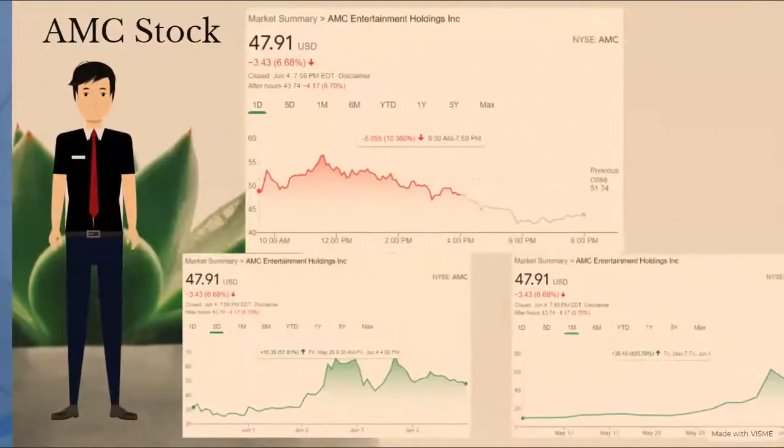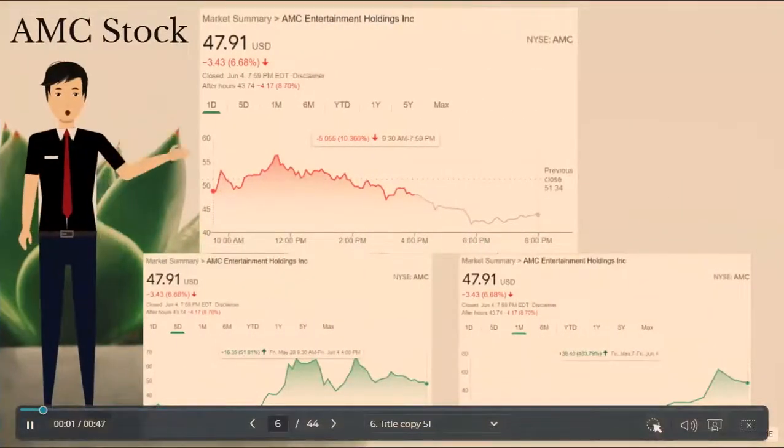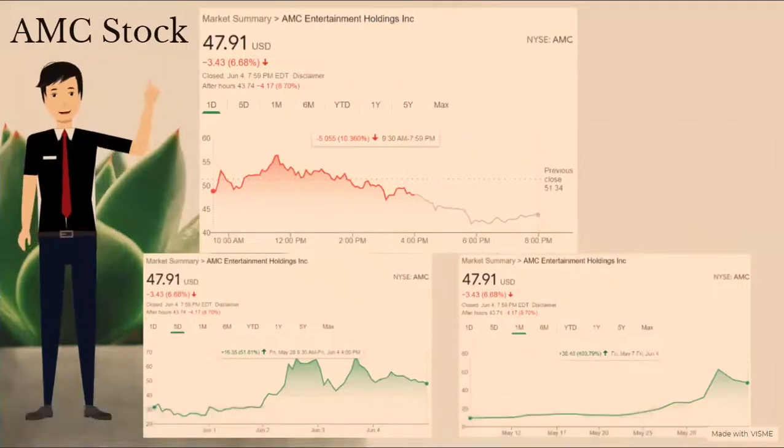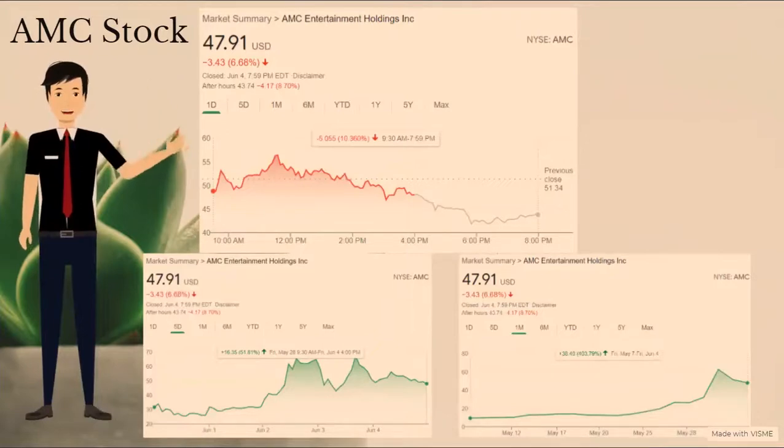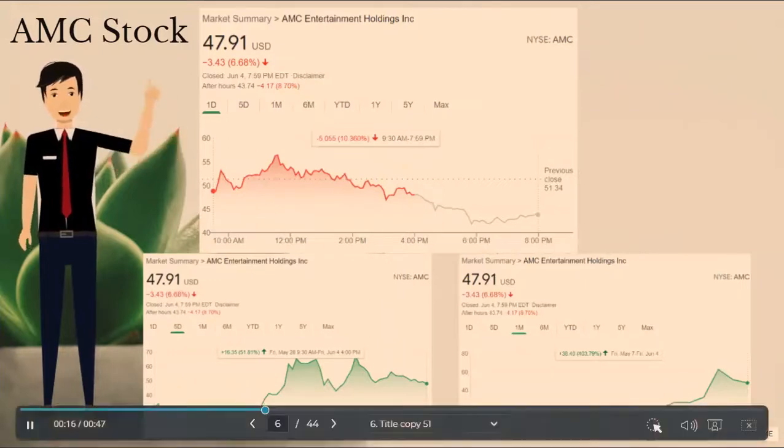So as of after hours on Friday, June 4th, AMC had a stock price of $43.74. Although it's been recently on the downtrend, if we look at the five-day chart, we see that it's still up over 51%. Also, if we look at the one-month chart, we see that AMC is still up over 400%.